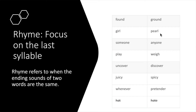Here are some examples. Found, ground — "ound" is the ending syllable, so found and ground rhyme. Girl, pearl — "earl" is the last syllable. Notice how they are spelled differently but are the same sound. Just because two words are not spelled the same doesn't mean they can't rhyme. Someone, anyone — "one" is the last syllable, so both of these end with "one" — someone, anyone.